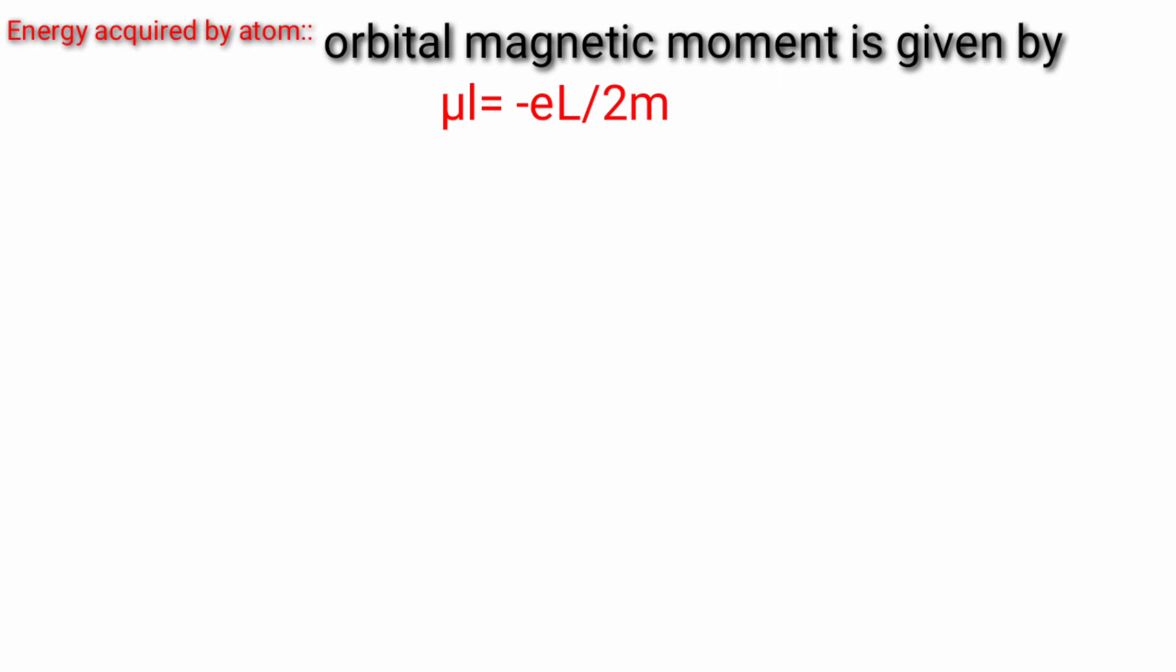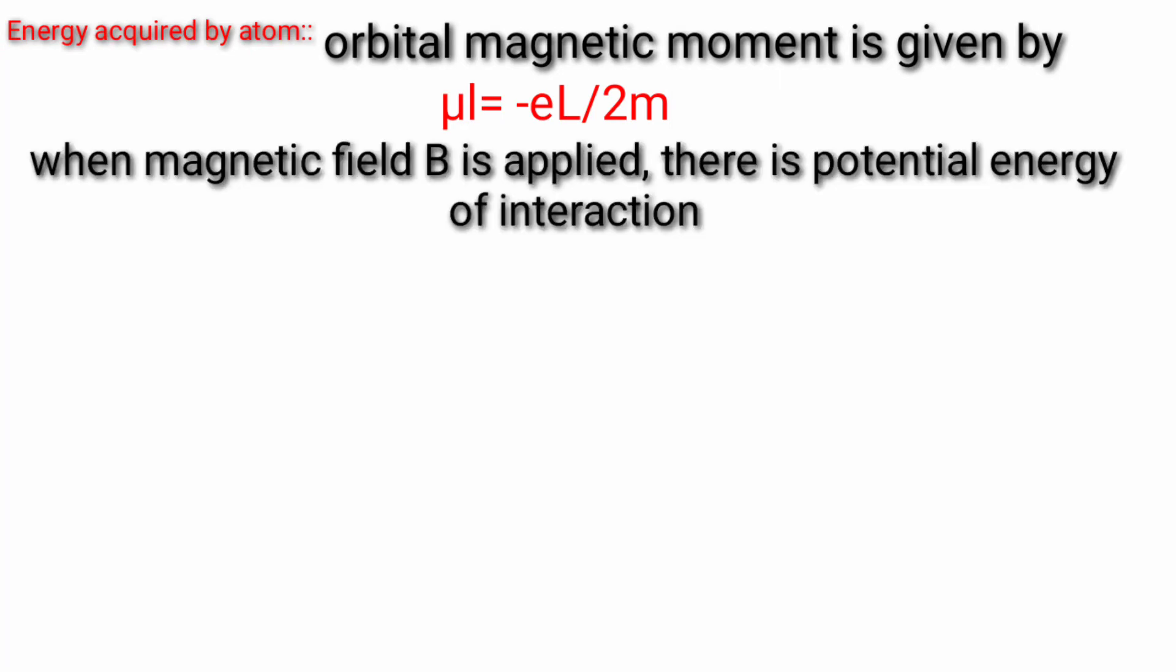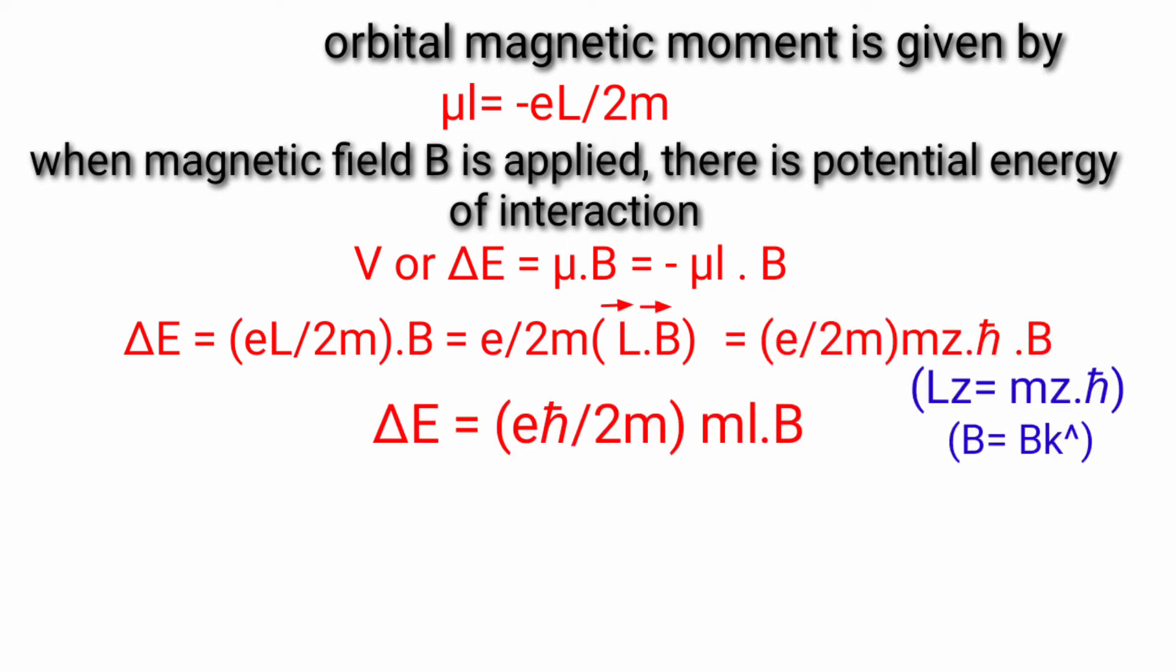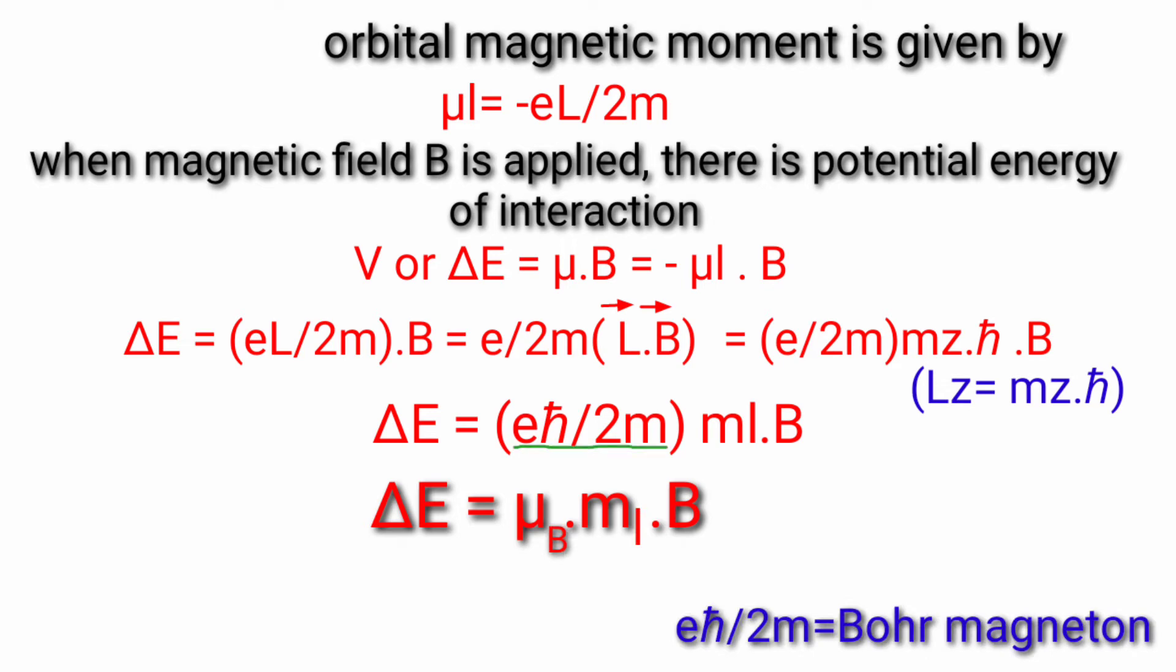After applying the magnetic field, what will change in energy? Orbital magnetic moment. When the magnetic field B is applied, there is potential energy of attraction, that is minus mu L dot B. So if we put this value in orbital magnetic moment, this will be e by 2m L dot B. If we simplify the dot product of L and B, this will be e h bar by 2m. This is Bohr's Magneton, so we denote it mu B. Ml has magnetic quantum number, projection of L. B is applied magnetic field.